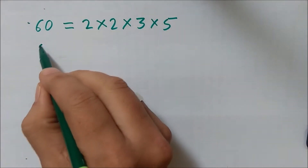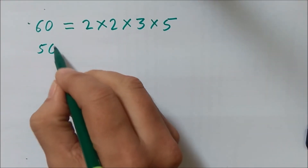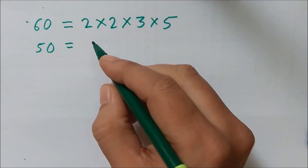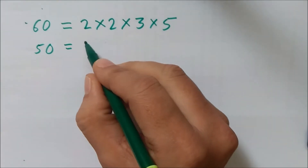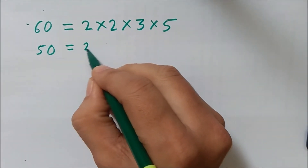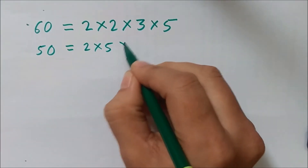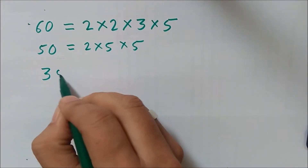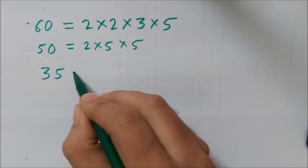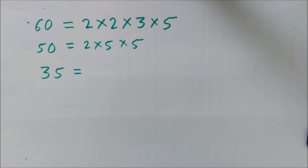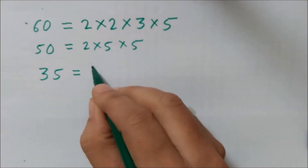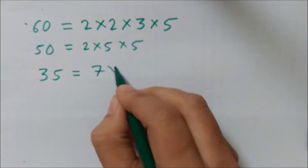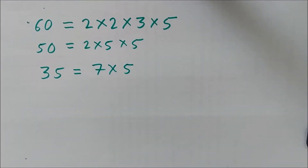Similarly, 50 can be written in the prime factor form as 2 into 5 into 5, or another number, 35, can be written in the prime factor form as 7 into 5. All these are prime factors.